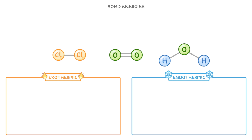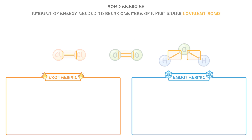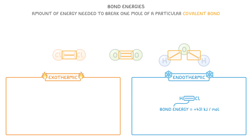When we say bond energy, what we're actually referring to is the amount of energy needed to break one mole of a particular covalent bond. So if I had an atom of hydrogen bonded to an atom of chlorine and said that the bond energy was positive 431 kilojoules per mole, that means we'd have to supply 431 kilojoules of energy to break one mole of these bonds.